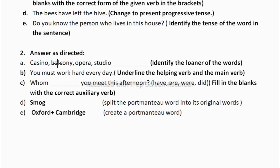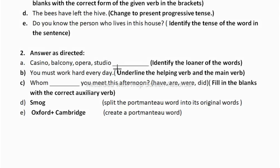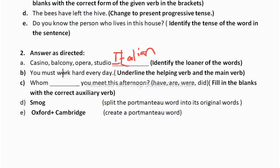Now question 2, again 'answer as directed.' For example: 'Casino, balcony, opera, and studio — identify the language of origin of the word.' In your textbook page 119 there is a box with words and their source languages. You should learn all the words along with the language they come from. These words are taken from the Italian language. Learn all the words so you can easily solve this question.